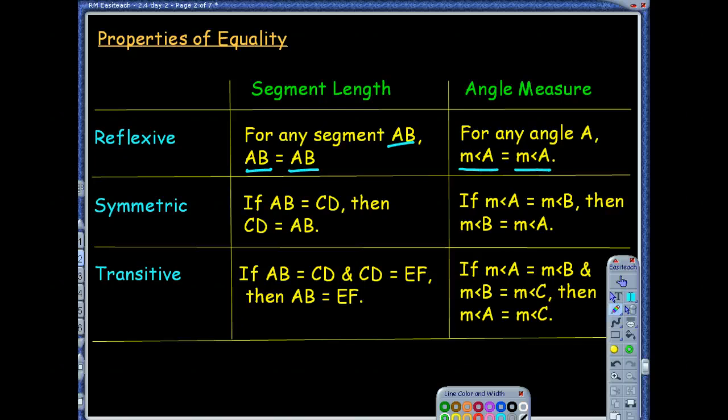Transitive property, again, we've seen these properties before. But the transitive property just says if I have two measures that are equal, and notice that what one is equal to also equals something else in the next equation, we can go ahead and say, okay, well, if they equal the exact same thing, then these equal each other. That's what we call the transitive property.